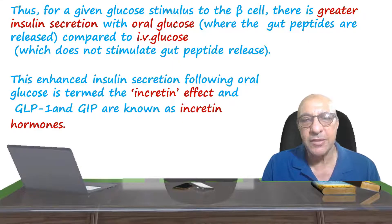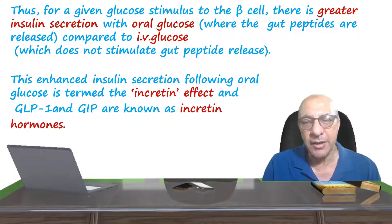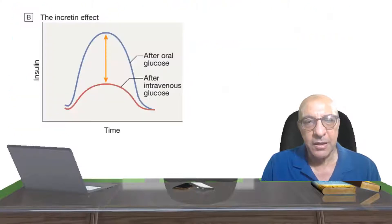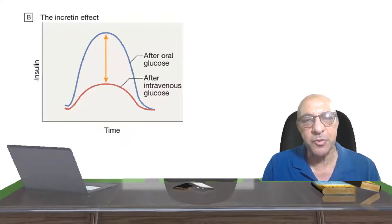This effect has been called the incretin effect, and these two polypeptides are called the incretin hormones. The importance of this phenomenon is that we try to use it in treating diabetes mellitus by using certain drugs which act to prolong the effect of these two polypeptides, augmenting their effect on the beta cells of the pancreas and increasing insulin secretion in the diabetic patient. We can see this clearly in the figure: oral glucose shown in blue produces a much higher insulin secretion response than the same amount of intravenous glucose shown in red, due to this incretin effect.